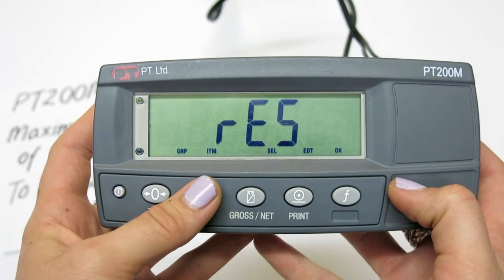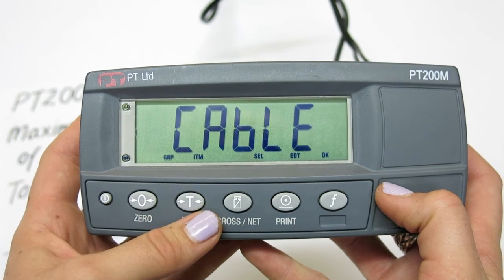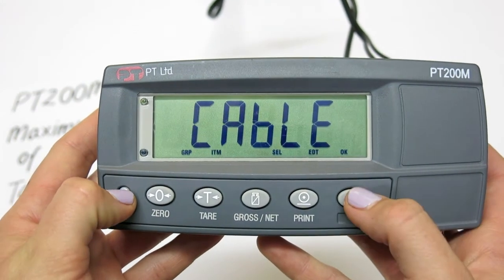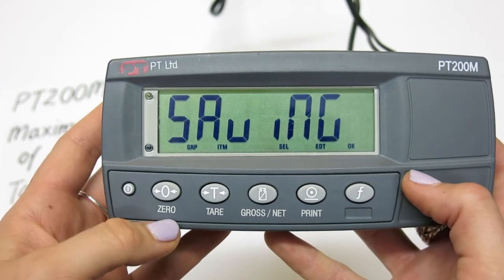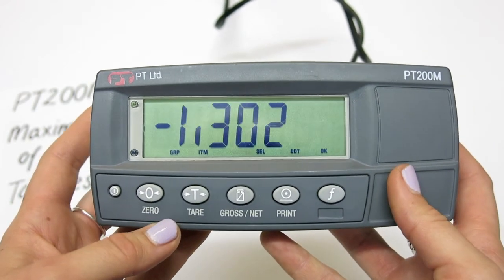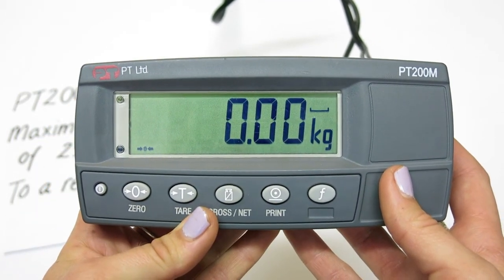The last three options in the build menu involve much the same process. Once complete, press and hold the power and F key to return to normal weighing mode. The indicator is now set up and ready for calibration.